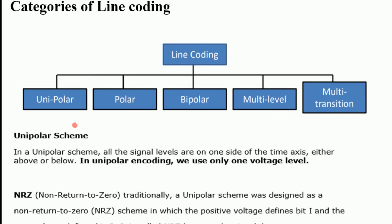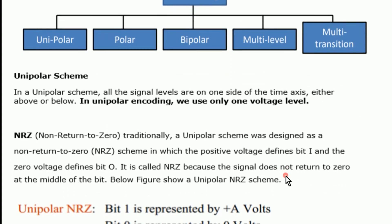In line coding, there are different categories: unipolar, polar, bipolar, multilevel, and multitransition. In the unipolar scheme, all signal levels are on one side of the time axis, either above or below, and only one voltage level is used. The unipolar scheme uses non-return to zero (NRZ) encoding, where the positive voltage defines bit 1 and zero voltage defines bit 0.